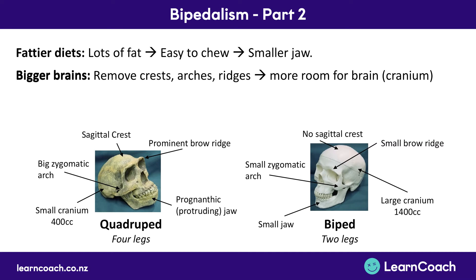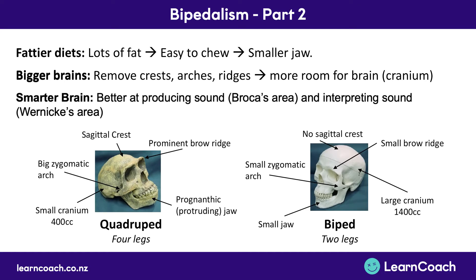To wrap up on the development of the brain: one of the best developments we had as bipeds was the ability to produce better sounds, so we can articulate language a lot more clearly. We can make a wide range of sounds — highs and lows — we can mimic people, and we can also interpret sound as well. So that's how the fattier diets led to bigger brains, and how that led to all of these changes in the skull.